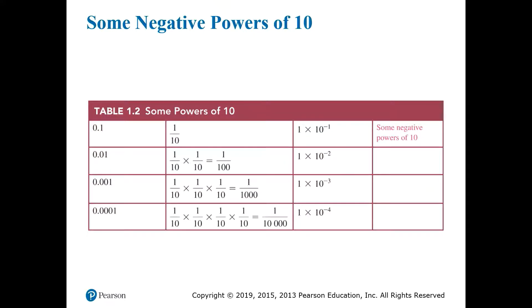On this slide, we see some of the negative powers of 10. Hopefully, you remember that raising a number to a negative power is the same as raising 1 over that number to the positive power. That means that 10 to the minus 1 is really 1 over 10 to the positive 1, which is 1 tenth, or 0.1. 10 to the minus 2 is 1 over 10 squared, or 1 over 10 times 1 over 10, which is 1 over 100, or 0.01.